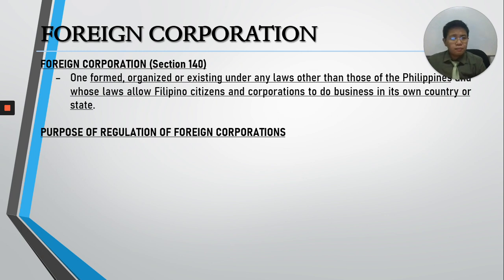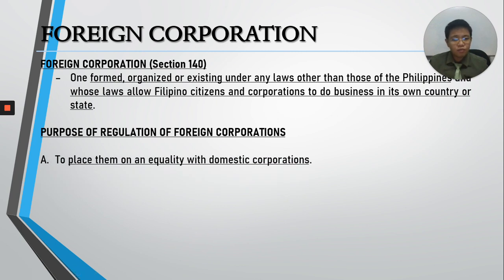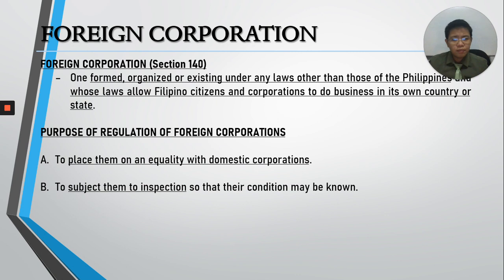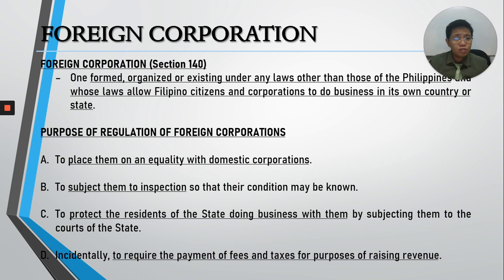A foreign corporation obtains authorization from our state by obtaining a license, subject to reasonable conditions. The purposes of regulating foreign corporations are: to place them on equality with domestic corporations; to subject them to inspection so that their condition may be known; to protect residents of the state doing business with them by subjecting them to our courts; and incidentally, to require payment of fees and taxes to raise revenues.